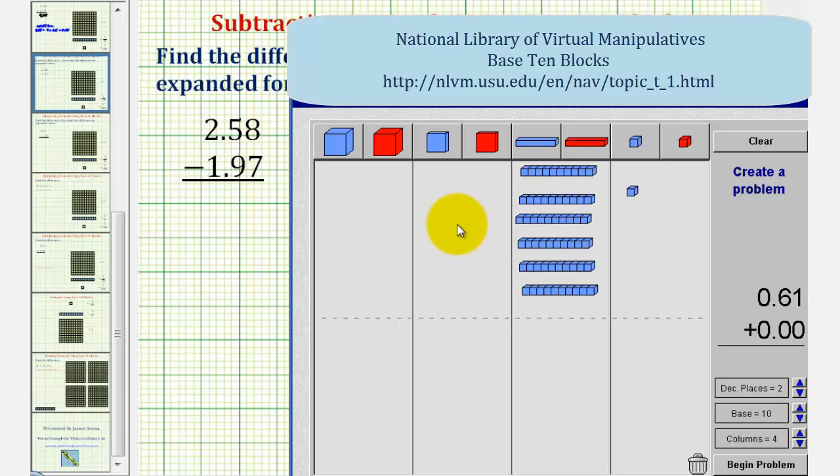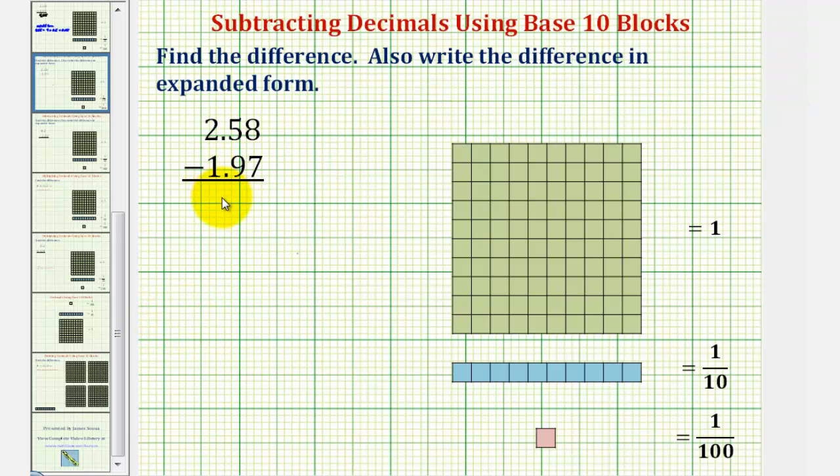Notice how that leaves us again with six longs and one bit, or six tenths plus one hundredth, which means our difference is sixty-one hundredths.